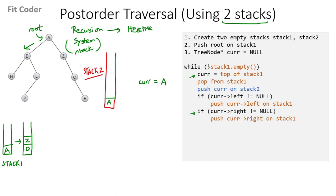We again check the while condition — stack1 is not empty. We set current to the top of stack1, which is Z, and we pop from stack1. Then we push current onto stack2. We check the left of Z, which is null, so this condition is false. We check the right of Z, which is C, and we push C on stack1.